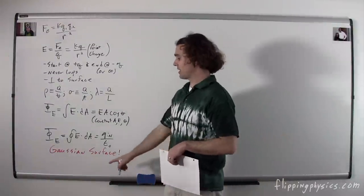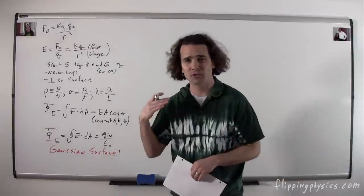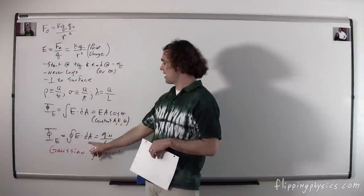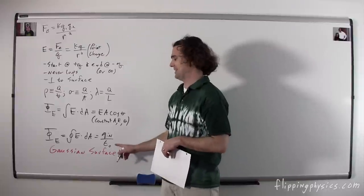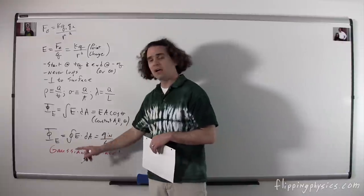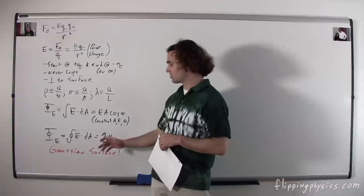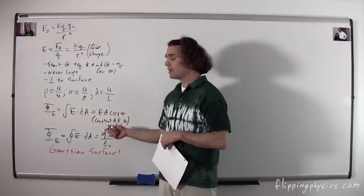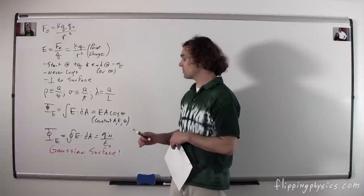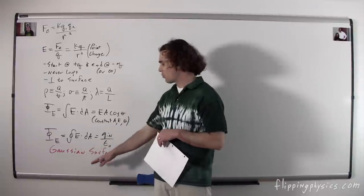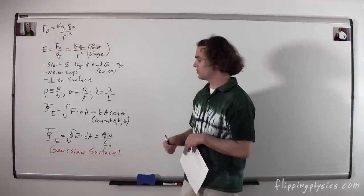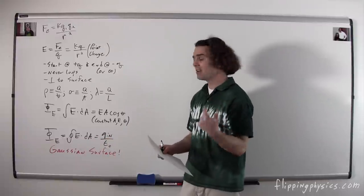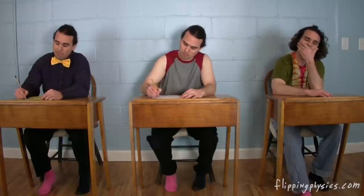Gauss's law has to do with a Gaussian surface. Whenever you're using Gauss's law, you have to draw and identify your Gaussian surface. Gauss's law is the closed surface integral: E·dA equals the charge inside the Gaussian surface divided by ε₀. Usually we use Gauss's law to figure out the electric field. In order to use it, you choose a Gaussian surface such that the electric field is constant on it, and the angle needs to be either 0 or 90 degrees.